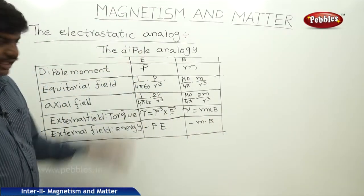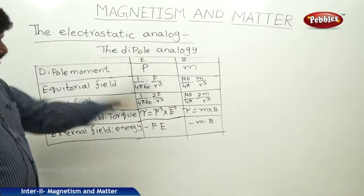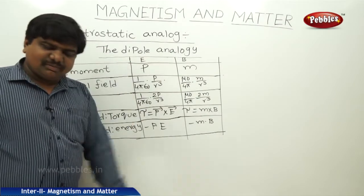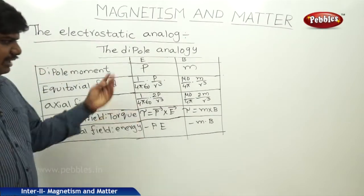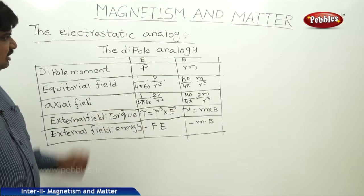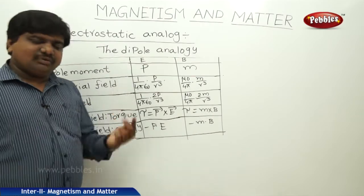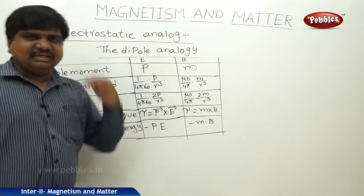So in all cases, P is replaced by M, and 1 by 4 pi epsilon naught is replaced by mu naught by 4 pi, and all remaining quantities are the same. This is said to be the analogy of the dipoles in electric and magnetic fields.